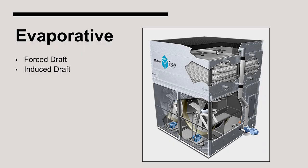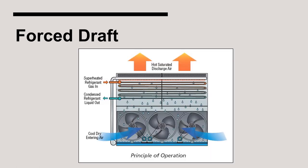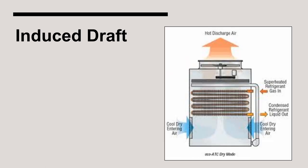The two configurations of evaporative condensers are forced draft and induced draft. The forced draft style of condenser involves fans which push the outside air through the condenser where it flows across the tube bundle and through the mist eliminators at the top of the unit. The fans for induced draft styles of condensers are typically located at the top of the unit. The fans pull outside air through the bottom of the condenser where it flows across the tube bundle. The air exits the condenser through the fan at the top.